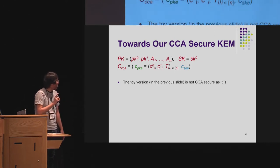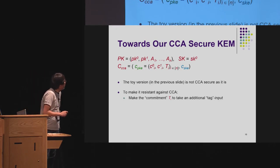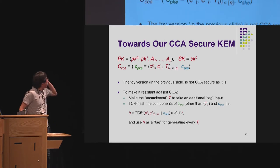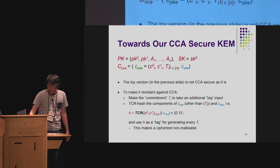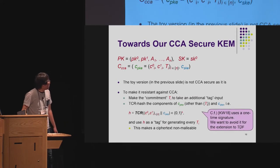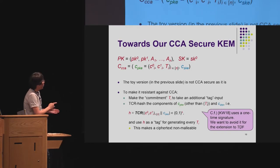The toy version in the previous slide is actually not CCA-secure — in particular the SKE part is malleable. To make it resistant against CCA attacks, we make the commitment T_i take an additional tag input, use a TCR hash to essentially combine the inputs other than T_i to generate a hash value, and feed this hash value into the commitment. This makes the ciphertext non-malleable. Peikert and Waters used a one-time signature for a similar purpose, but we want to avoid one-time signatures because we want to later extend this scheme to a trapdoor function without needing to recover the randomness for the signature.